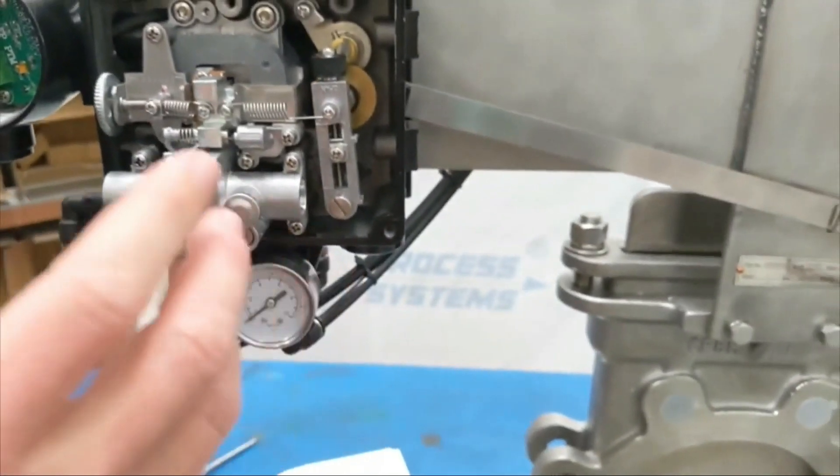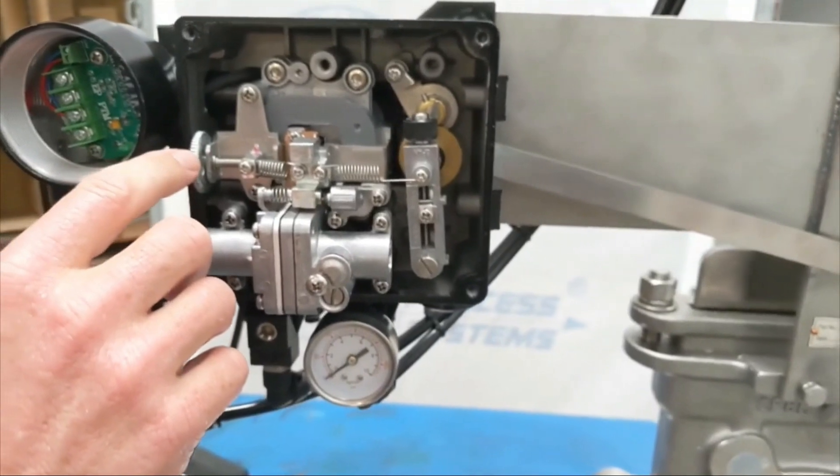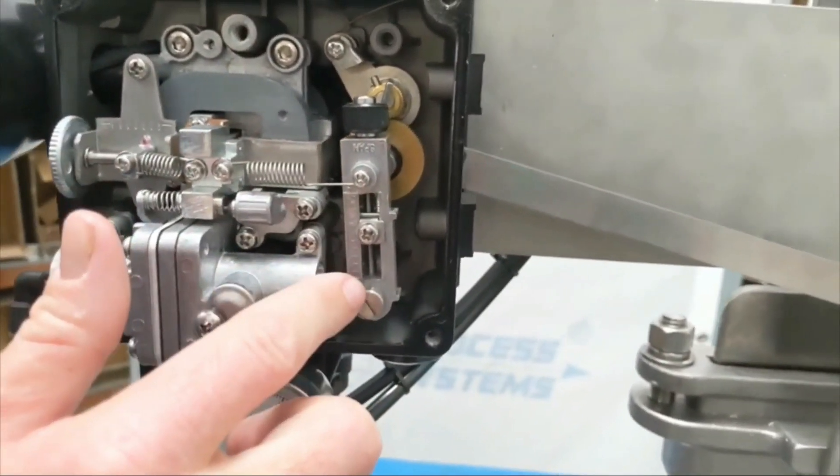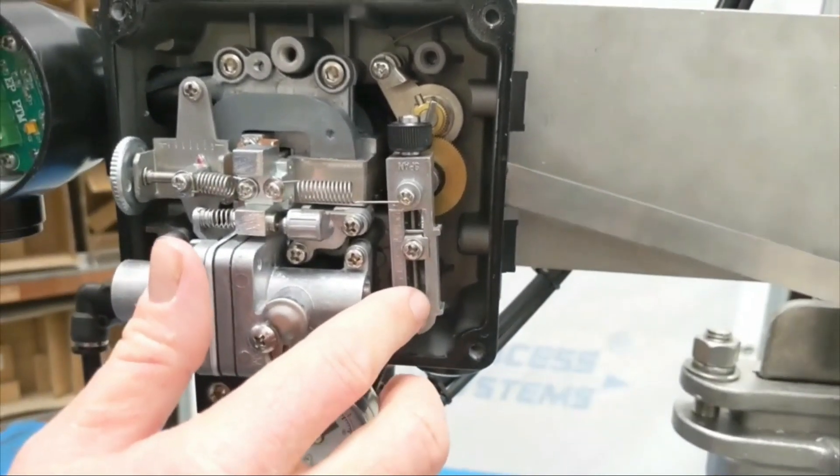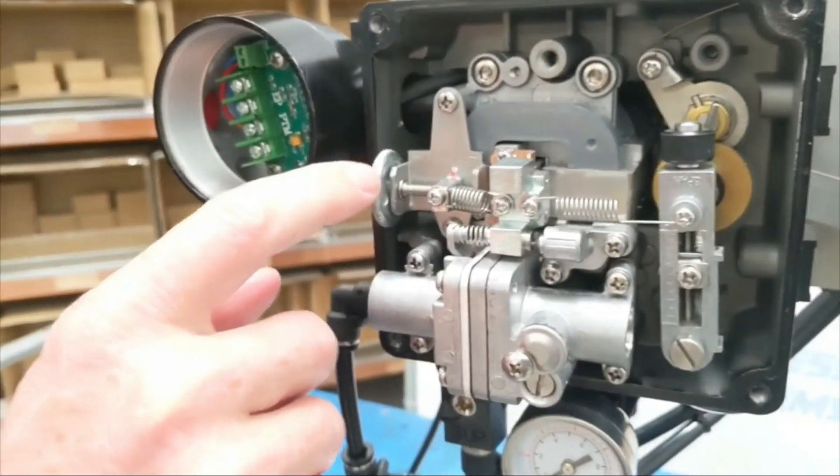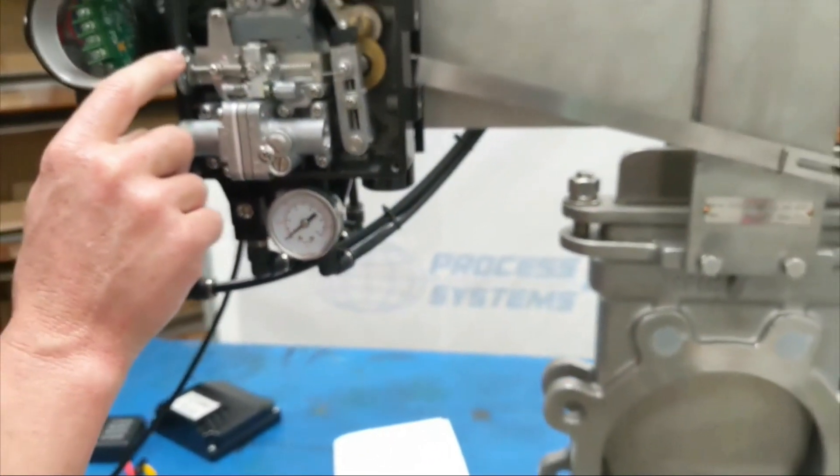Next, we need to check the feedback arm. Keep the valve at 50% of the range when mounting the positioner.